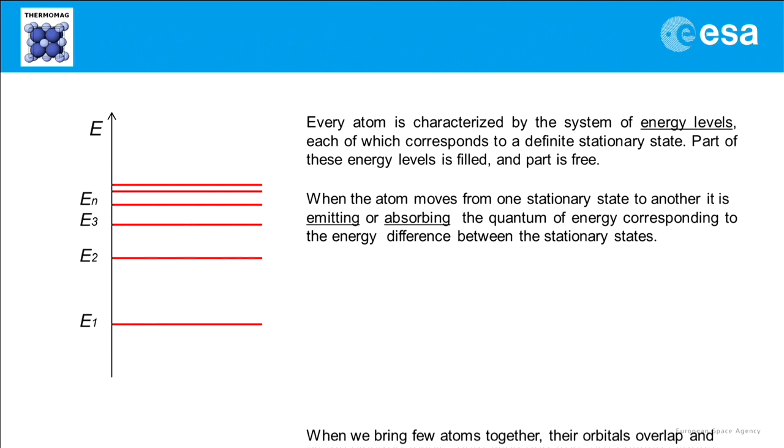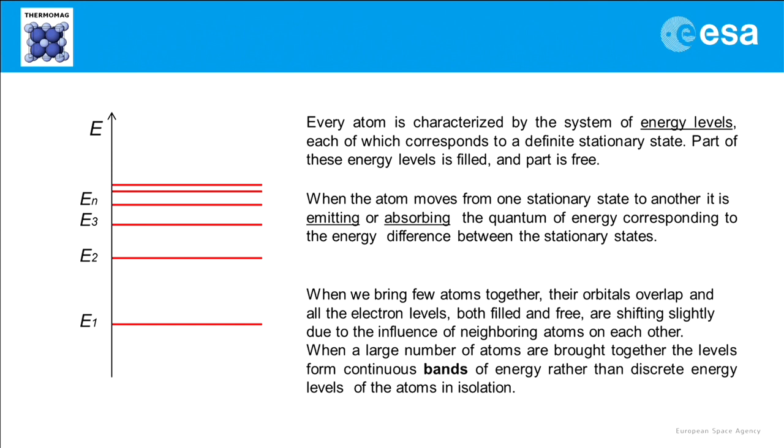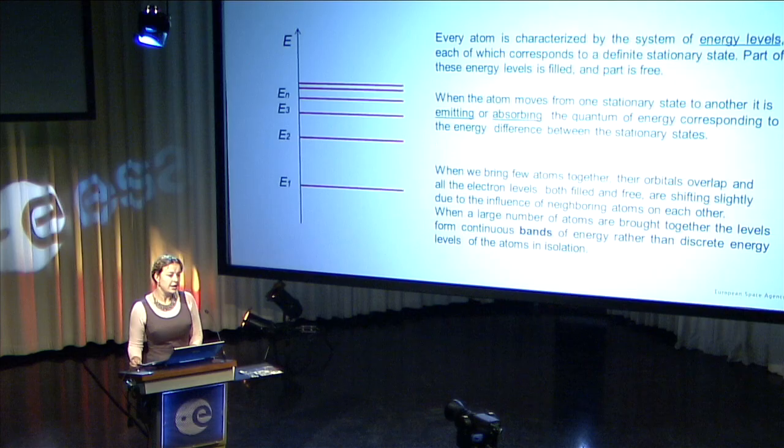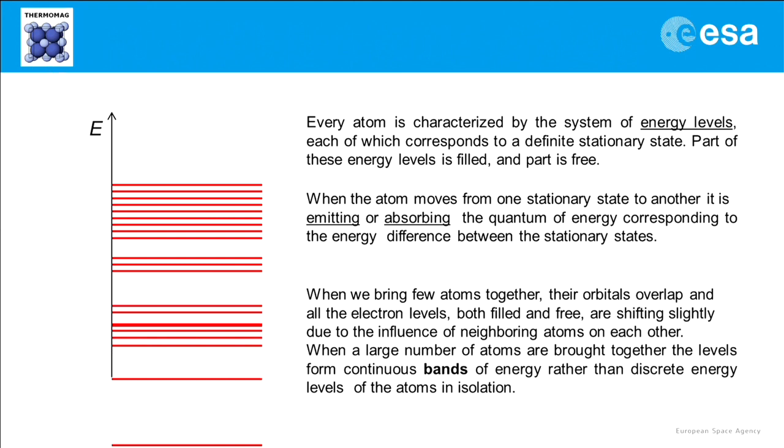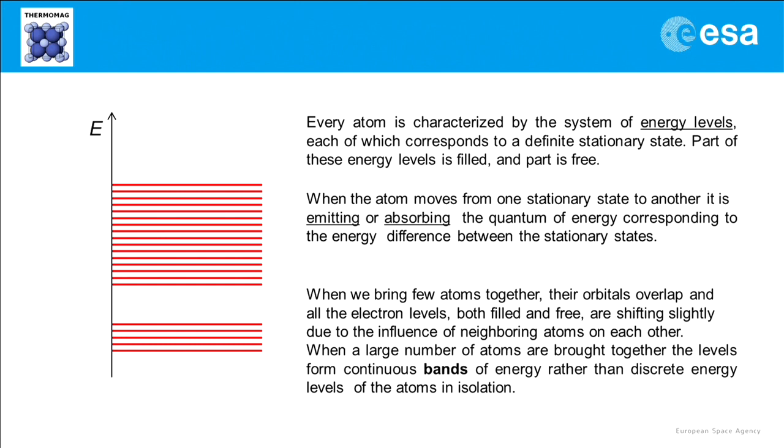When we bring a few atoms together, their orbitals overlap and energy levels are slightly shifting due to the influence of the neighboring atoms on each other, in particular the attraction of electrons of an atom by the nuclei of the neighboring atom. So when we bring a few atoms together, they form so-called energy bands rather than the discrete stationary states for isolated atoms.